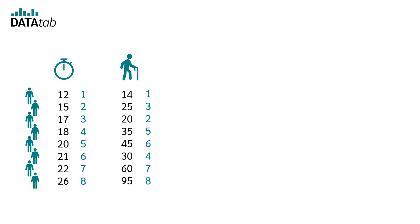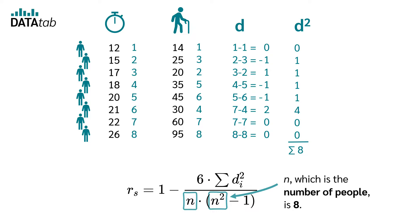Referring to our example, we get the different d's: 1-1 which is 0, 2-3 is minus 1, 3-2 is 1 and so on. Now we square the individual d's and add them all up. So the sum of d_i squared is 8.